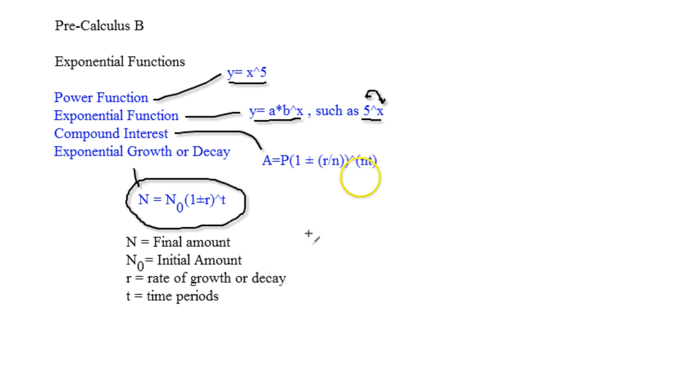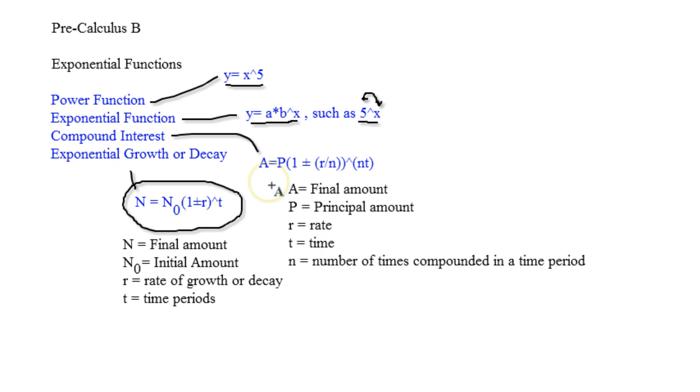Now exponential growth and decay, if you notice, is very similar except with one little hiccup, that n. So here's the actual definitions. A is the final amount, p is the principal amount or initial amount, r is the rate, t is the time, and then n is the number of times compounded in a time period. So if you've got a weekly account that is compounding interest weekly, this would be 52 because usually your time is measured in years.